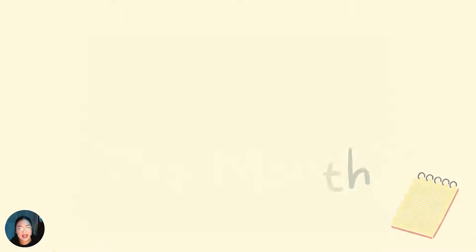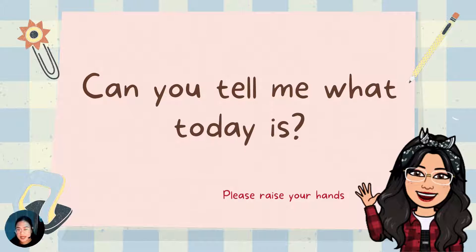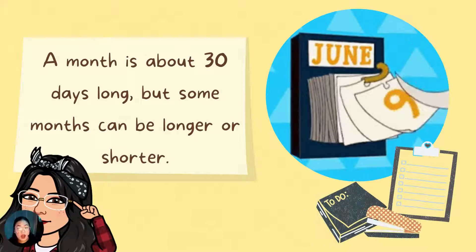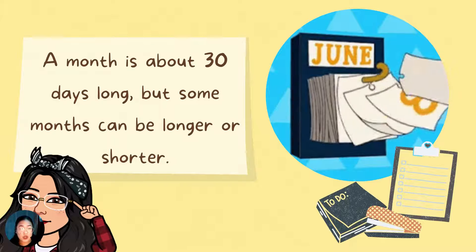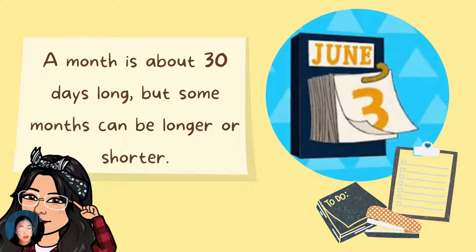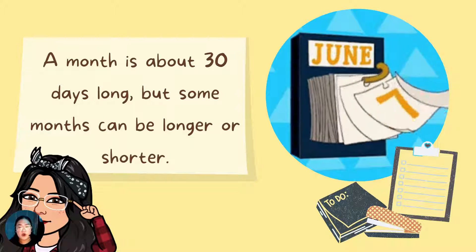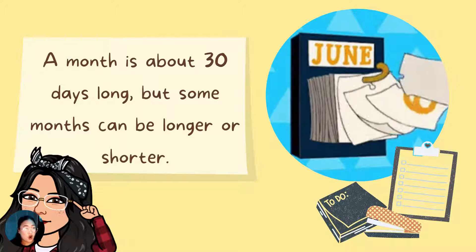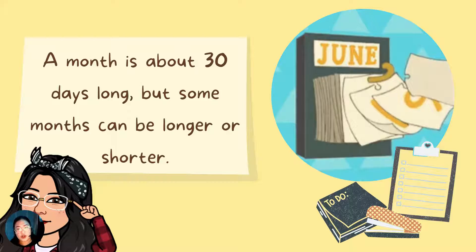Very good, class! Can you please tell me what today is? Can you raise your hands? Yes, Anavin! Today is October 2, 2021. Very good! A month is about 30 days long, but some months can be even longer and some months are even shorter. I will give you an example of a month that has longer days and a month that has shorter days.